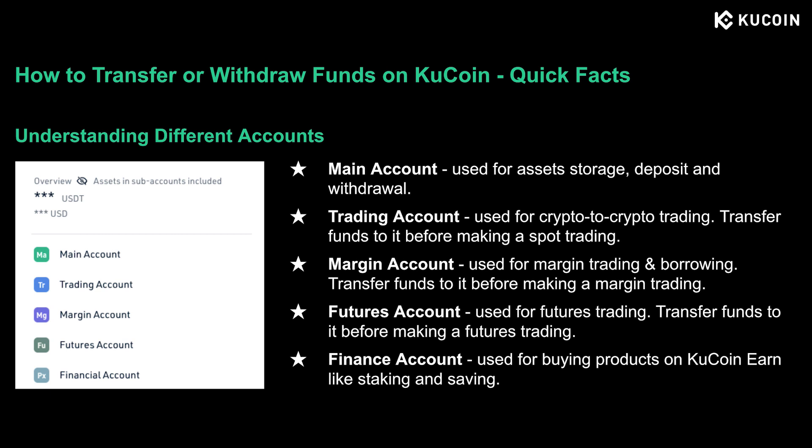The main account is the most commonly used one, which stores your assets, and you can deposit and withdraw your assets from this account. The trading account is used for crypto-to-crypto trading, so you need to transfer your crypto assets to the trading account before making a spot trade. We've already learned how to make crypto trading in our previous session.